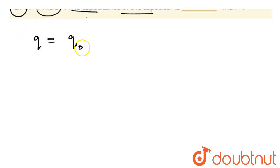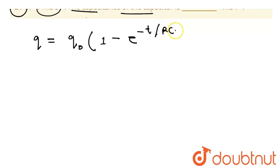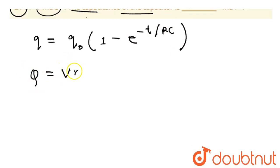So let's see. If you have a simple formula of charge, you should know it. Q is equal to Q0 into 1 minus e raised to the power minus t over R into C. And Q is equal to V into C.